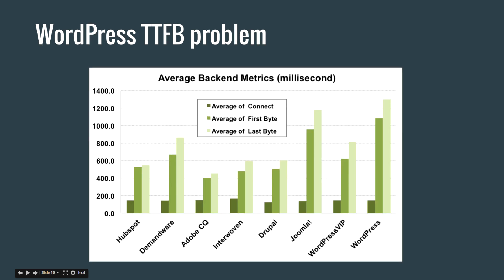So, why does WordPress have a time to first byte problem? Well, WordPress is constantly worst in class when it comes to time to first byte, as compared to other CMS systems. You can see here they've compared a number of CMS systems, some proprietary, some not — there are links at the end of the presentation. They took a huge amount of sites and looked at the average time to first byte. As you can see, self-hosted WordPress is at the very end of the spectrum. The average time was somewhere around 1.1 seconds.